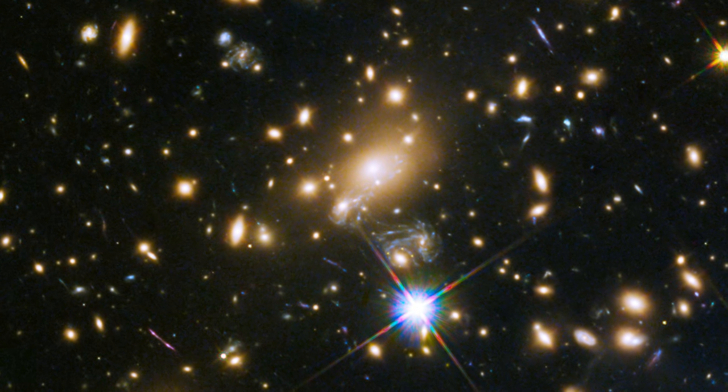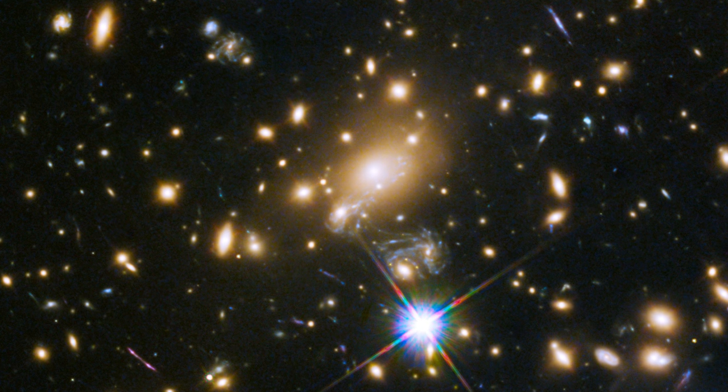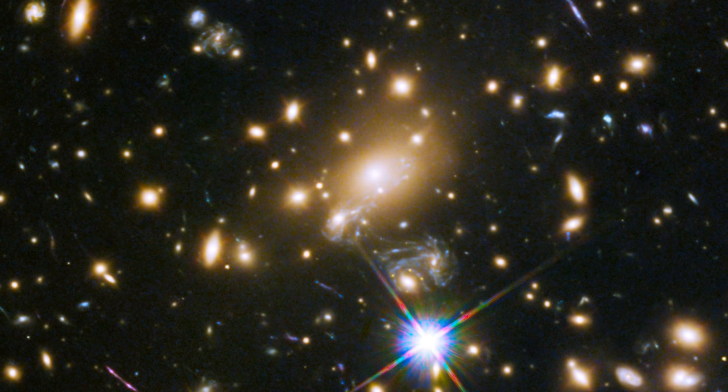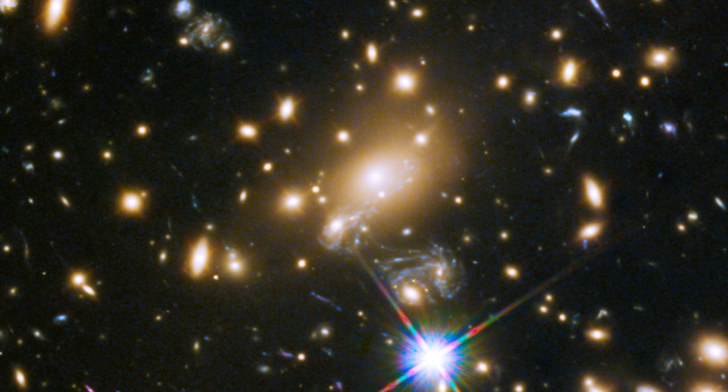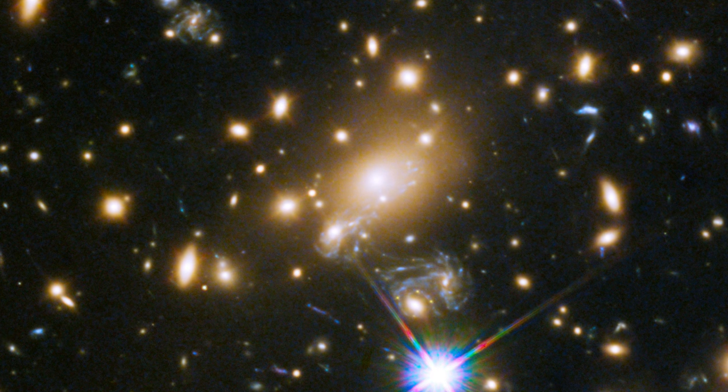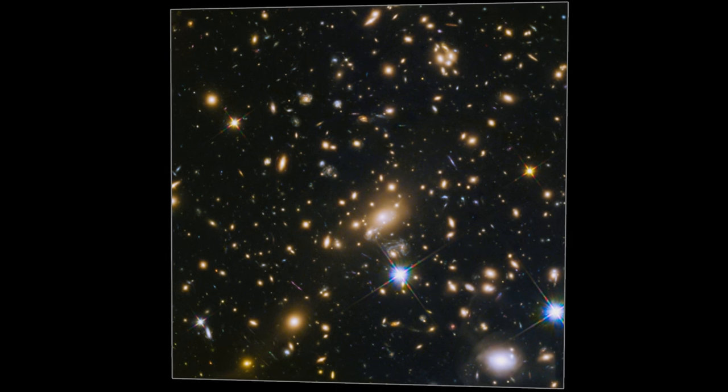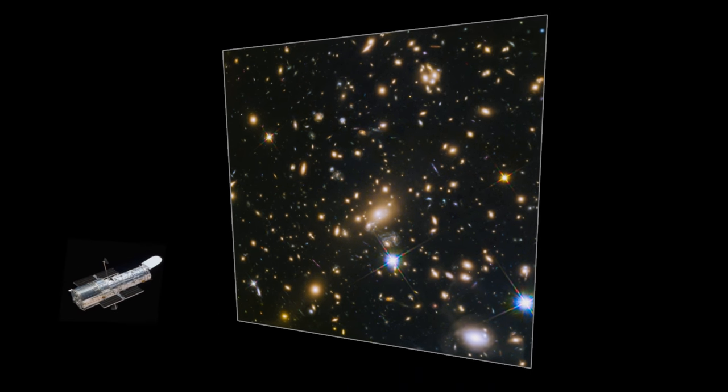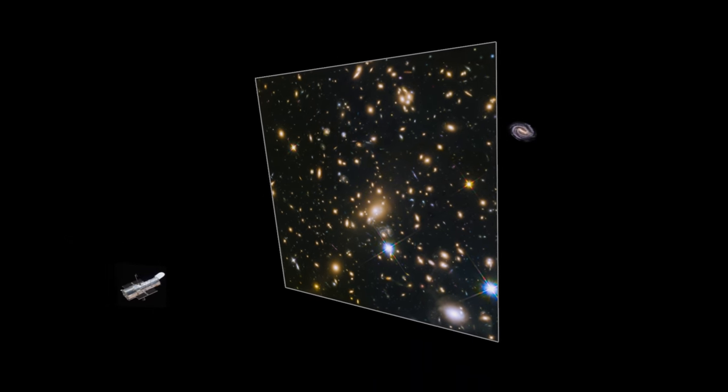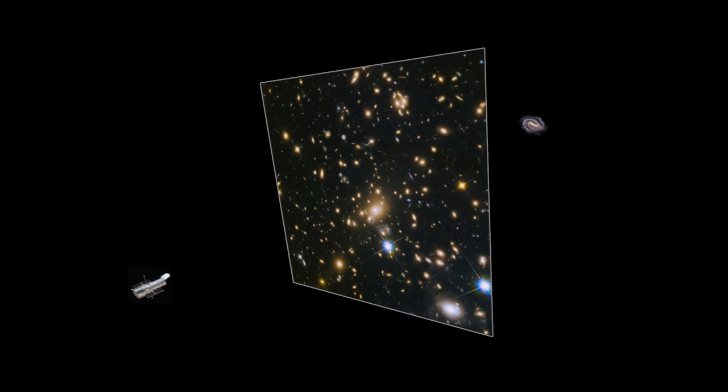One of the most distant clusters studied is MAX J1149.5 plus 2223, so distant that it takes the light 5 billion years to reach us. Using this cluster, Hubble has captured a rare event for the first time, the gravitationally lensed image of a supernova, arranged four times in a galaxy in the cluster.